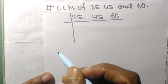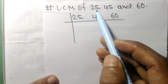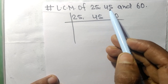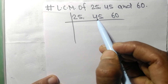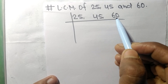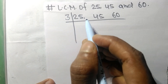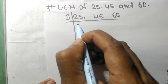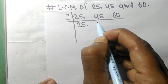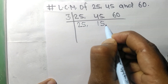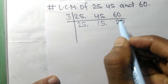Today in this video we shall find the LCM of 25, 45, and 60. 45 and 60 are exactly divisible by 3, but 25 is not, so it stays the same. 3 times 15 equals 45 and 3 times 20 equals 60.